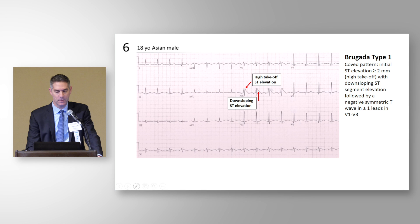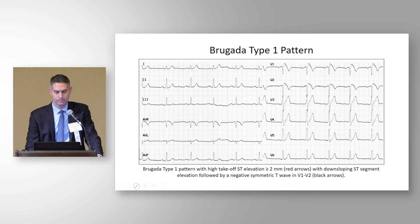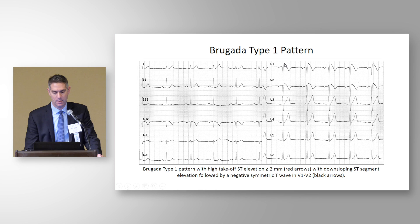Looking at this ECG: the high takeoff is well above the 2 millimeter threshold, with a pretty abrupt down-sloping that falls into T wave inversion. Here's another example of Brugada Type 1 pattern — in V1 you can see the very high takeoff of the ST segment, quickly down-sloping into the inverted T wave, with the same pattern in V2. The key features are the high takeoff, the down-sloping ST segment, and that symmetric T wave inversion.